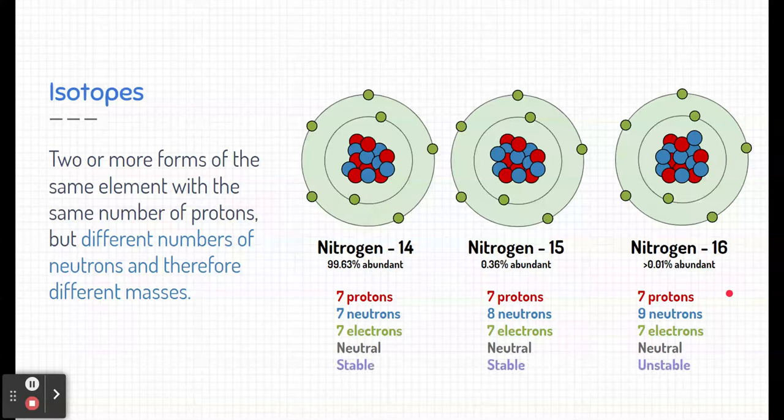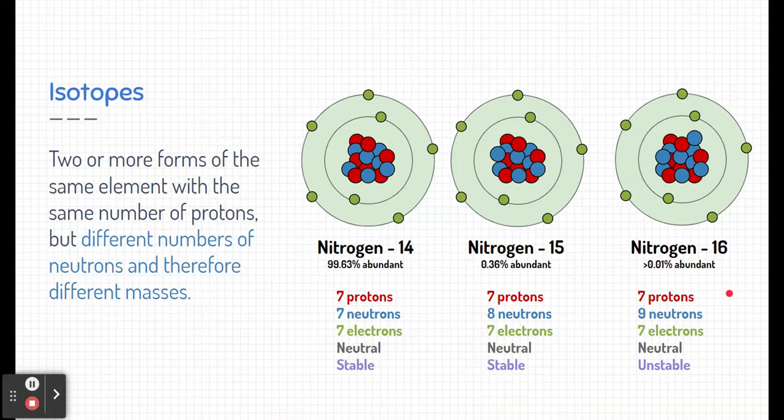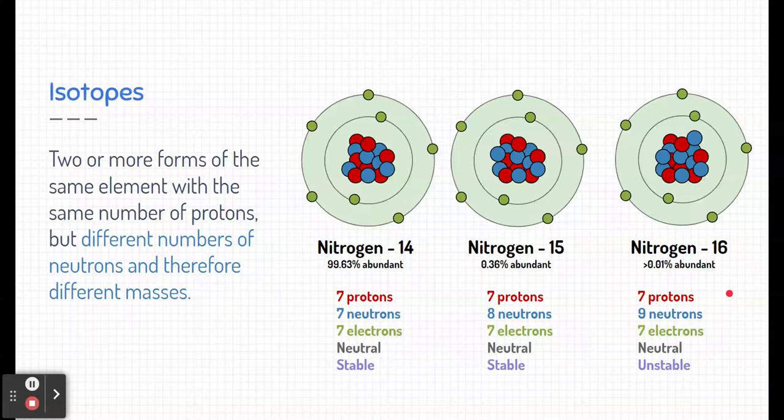But one thing we might want to note is the stability. Nitrogen-14 and nitrogen-15 are stable. Nitrogen-16 is not stable. The nucleus doesn't tend to want to stay together. This might tell us a little bit more about why we see more nitrogen-14s and nitrogen-15s, and we don't see very much nitrogen-16.